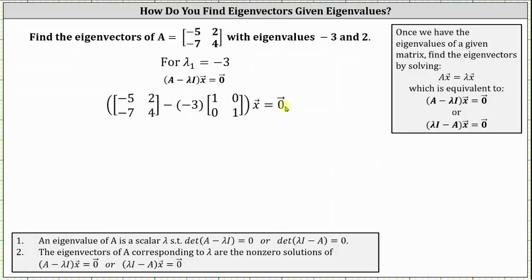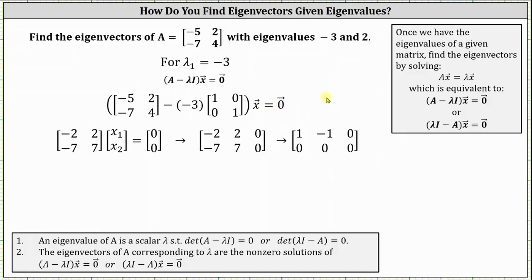From here let's write the corresponding matrix equation. For the coefficient matrix, the first row is negative five plus three times one, which is negative two, and then two plus three times zero, which is two. In the second row we have negative seven plus three times zero, which is negative seven, and four plus three times one, which is seven.